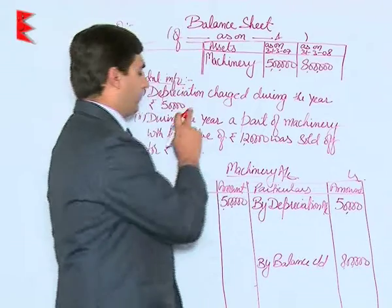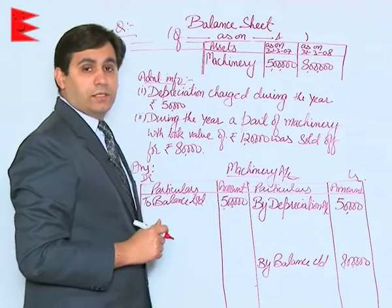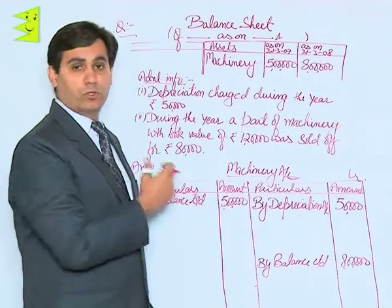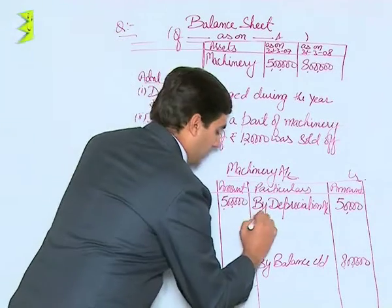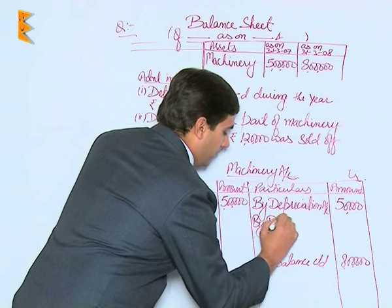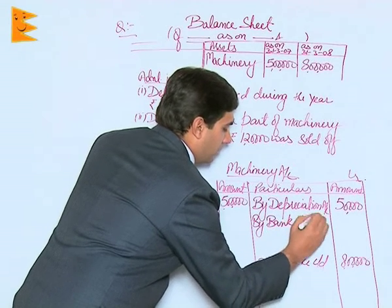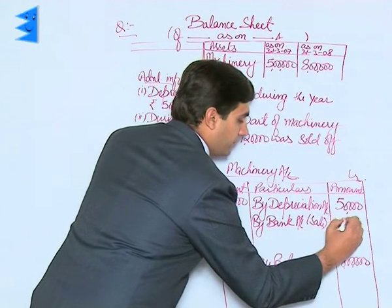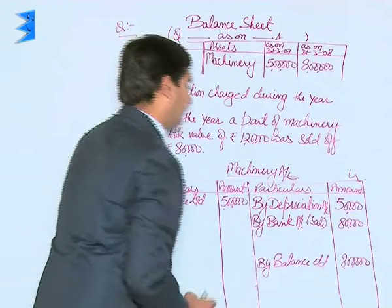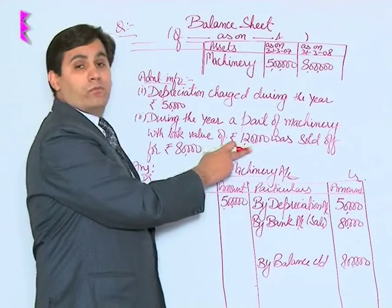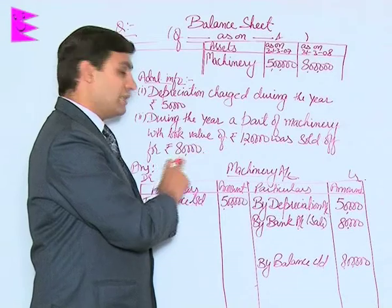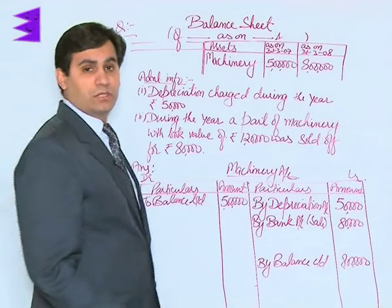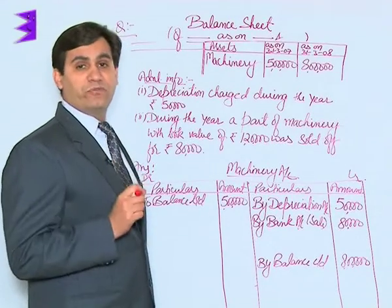During the year, a particular part of machinery whose book value was rupees 1 lakh 20,000 was sold off for rupees 80,000. That means there is a sale which would be entered as 'by bank account — sale,' and this sale is worth rupees 80,000. Out of the book value of 1 lakh 20,000, the sale value is just 80,000, which means there is a loss of rupees 40,000. You have to draw out this inference yourself.